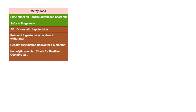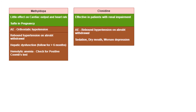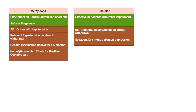Together these drugs decrease total central sympathetic outflow, lowering blood pressure. Methyldopa has little effect on heart rate but is safe in pregnancy. Adverse effects include orthostatic hypotension, rebound hypertension on abrupt withdrawal, and hepatic dysfunction which must be monitored for nearly six months of therapy. The most important adverse effect of methyldopa is hemolytic anemia; patients should be checked for Coombs test positivity. Clonidine is effective in patients with renal impairment; abrupt withdrawal leads to rebound hypertension, and it causes sedation, dry mouth, and worsening of depression.